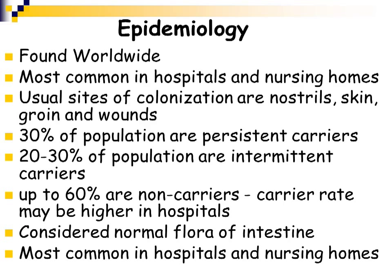Staphylococcus aureus is found worldwide and is commonly found in hospitals and nursing homes. It is normal flora in some individuals in the nostrils, on the skin, in the groin area, and in the armpits. 30% of the population are persistent carriers and 20 to 30% are intermittent carriers. This is very important because many people who interact with sick patients normally carry staphylococcus aureus somewhere on their body with no symptoms, but can transfer it to a very sick individual, who may then develop a severe, life-threatening, possibly fatal staphylococcus aureus infection.